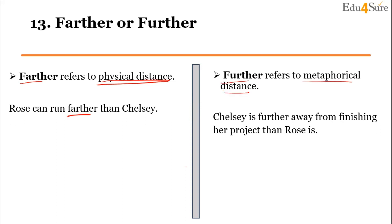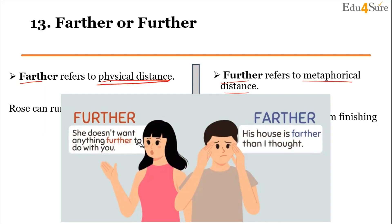For example: 'Chelsea is further away from finishing her project than Rose.' Finishing her project is not used in actual distance — metaphorical distance is used here. Another example: 'She doesn't want anything further to do with you.' That is also metaphorical distance, not actual physical distance.